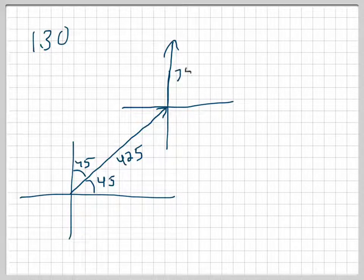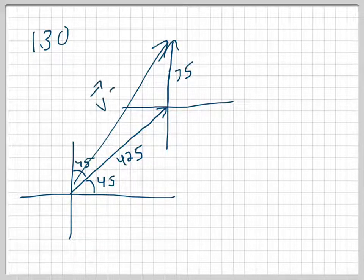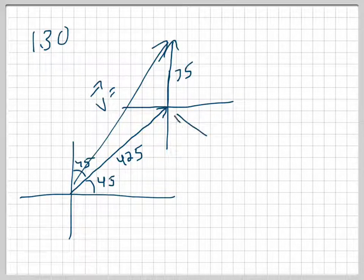This is 425 and this is only 75, so my picture isn't proportional — try to draw a good picture. My resultant is going to go from the tail of the first to the head of the last. I want to figure out what this velocity vector is. This is a harder problem because I do not have a right triangle; I cannot use SOHCAHTOA. I would love to find the angle in the middle because then I'd have side-angle-side and I could use the law of cosines.